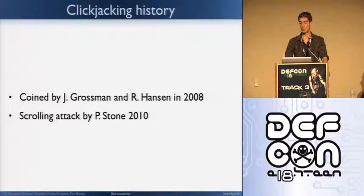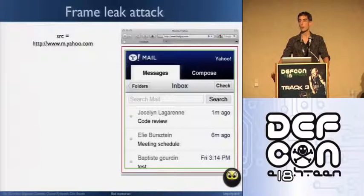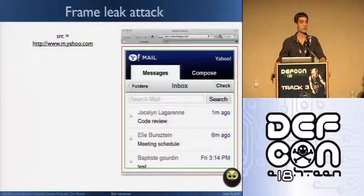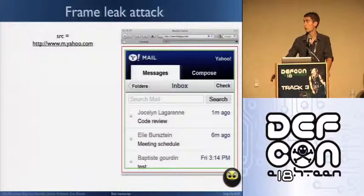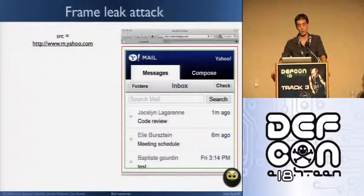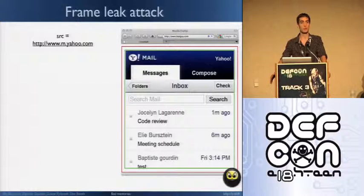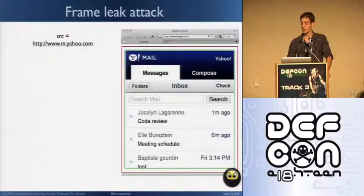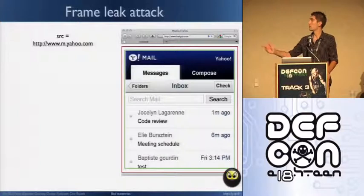This attack works as follows. In the first step, the attacker will double-frame the target website — in this example, it will be the mobile version of Yahoo Mail. In the second step, the attacker will use the browser feature called Anchor PowerScrolling. This feature makes a page scroll automatically to a specific ID when adding it as a hashtag in a URL. Every email can be associated to a specific ID.